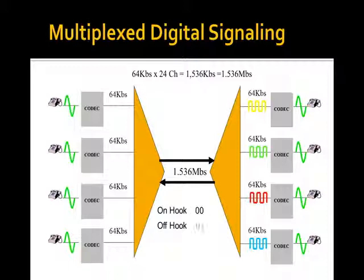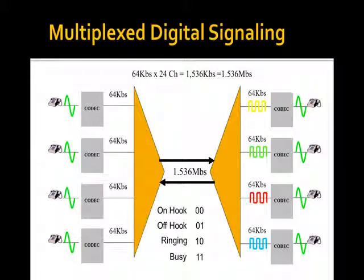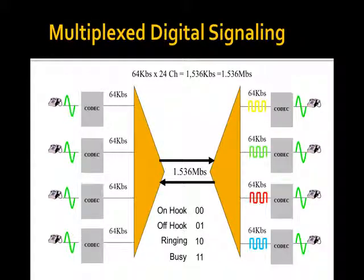On hook — and I just made up the combinations here — on hook we might call zero zero; off hook, zero one; ringing, one zero; busy, one one. Something along that line. Now I've solved all of my problems: I've dealt with attenuation, I've dealt with noise pickup. I can move — in this case 24 calls — across a lot less wire, and I can move the signaling from end to end.